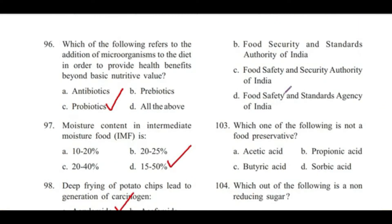Question 103: Which one of the following is not a food preservative? — Acetic acid, propionic acid, butyric acid, or sorbic acid? Answer is C, butyric acid. Butyric acid is used in food as a flavoring agent.